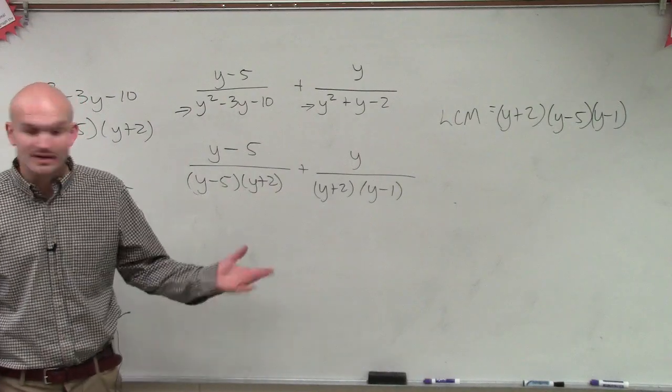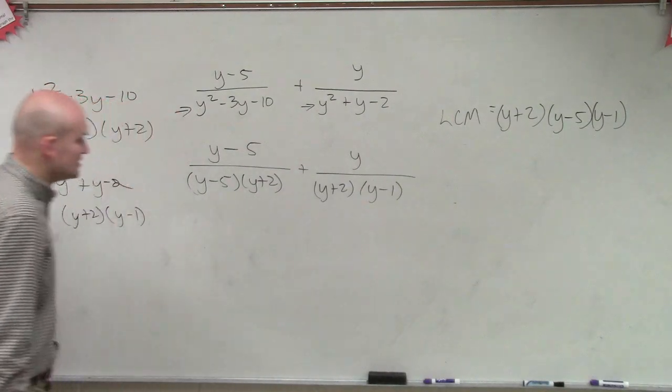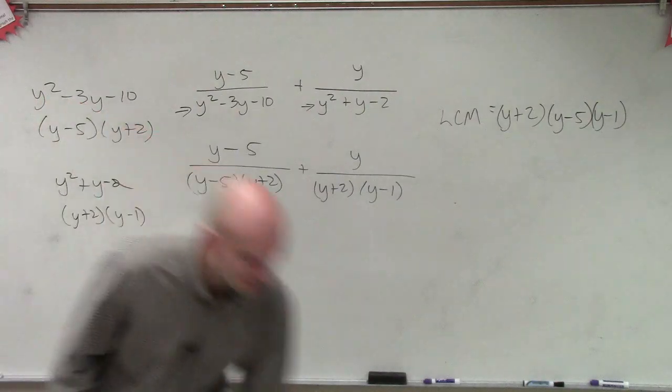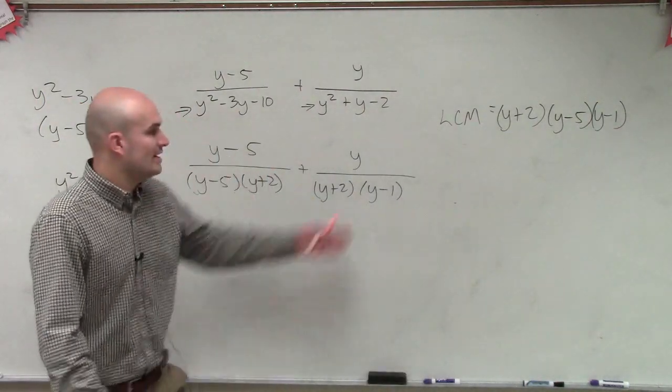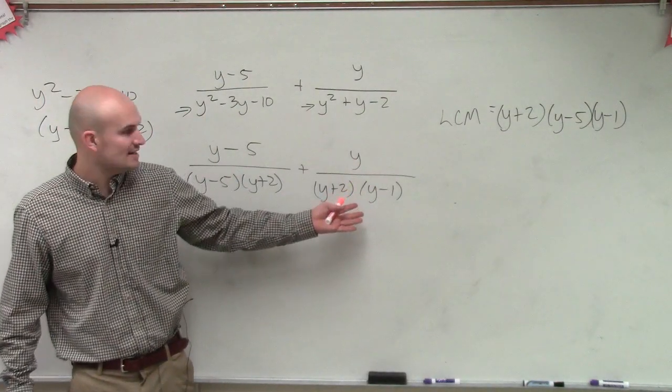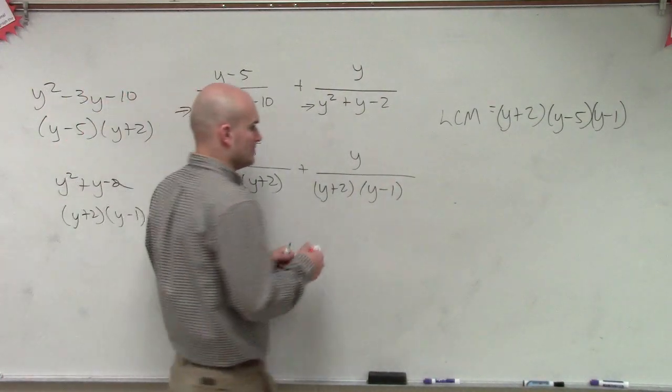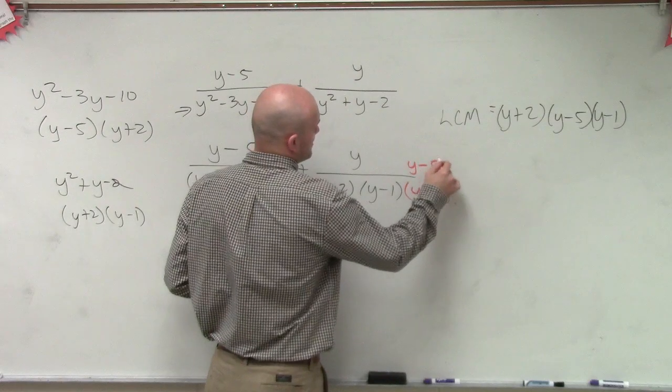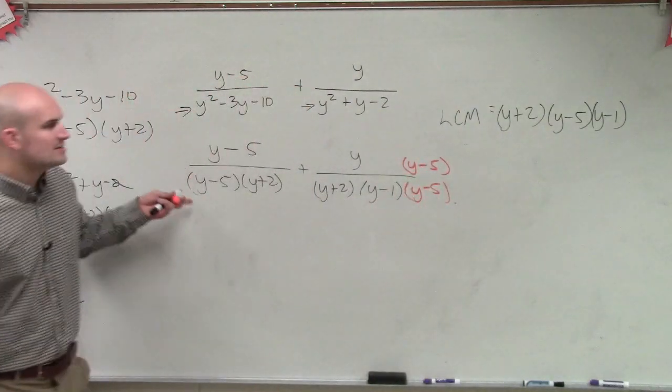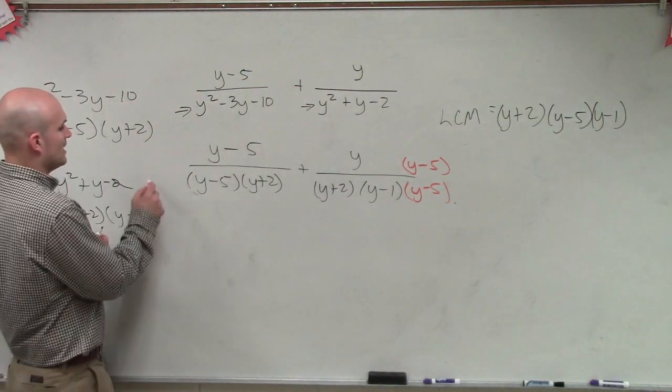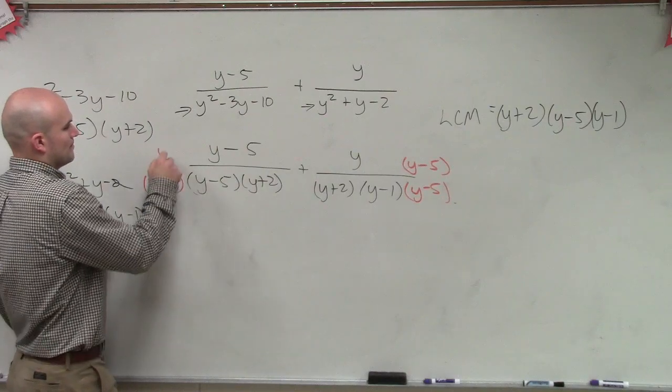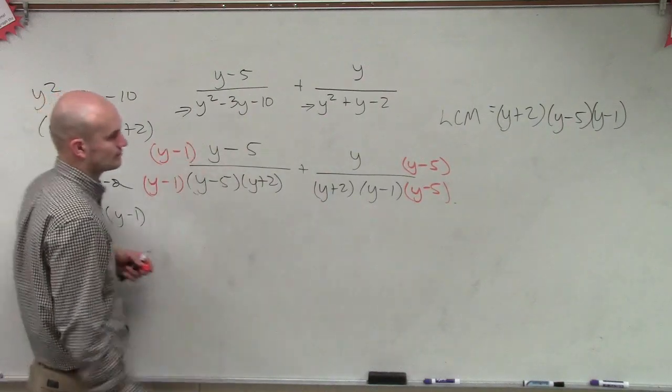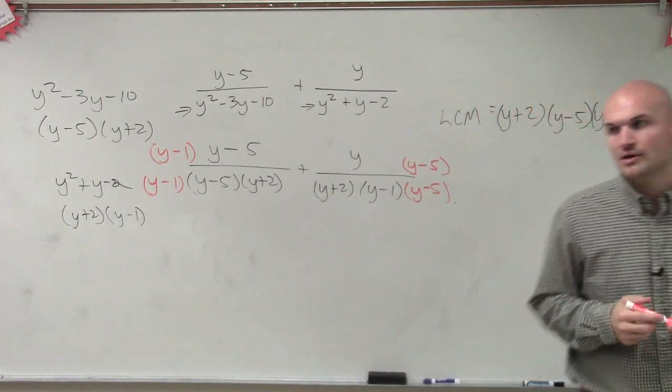So now I need to look at it and say, what do I need to multiply each term by to get it to that LCM? To get this to my LCM, I need to multiply by y minus 1, and I multiply that on the top and the bottom. Over here, to get it to my LCM, I need to multiply by y minus 5. Does everybody follow me with this?